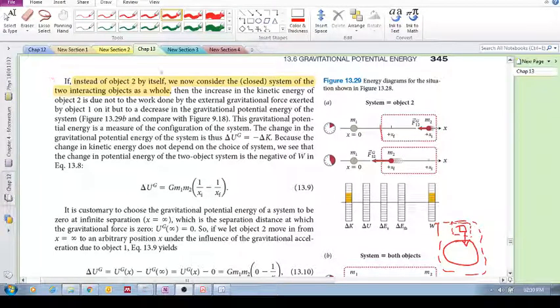Alright, so in the previous one, we looked at the work done by one object of mass 1. We looked at the work done by the gravitational force that mass 1 exerts on mass 2. And why did we look at the work? Because essentially we took only particle or object 2 as our system, and so the gravitational force would then be external and it would be work done.